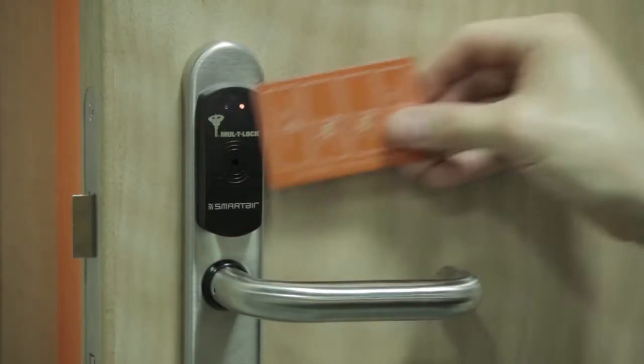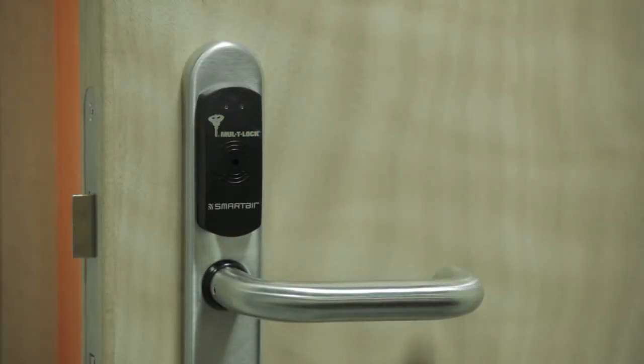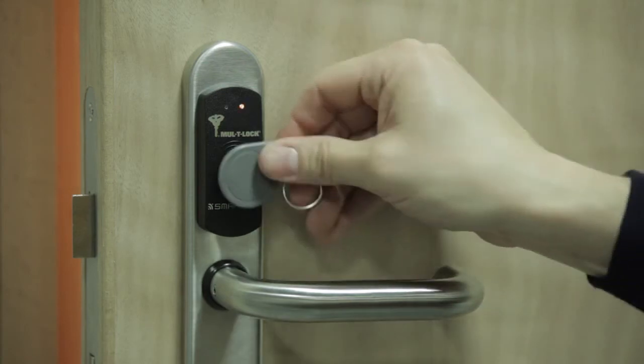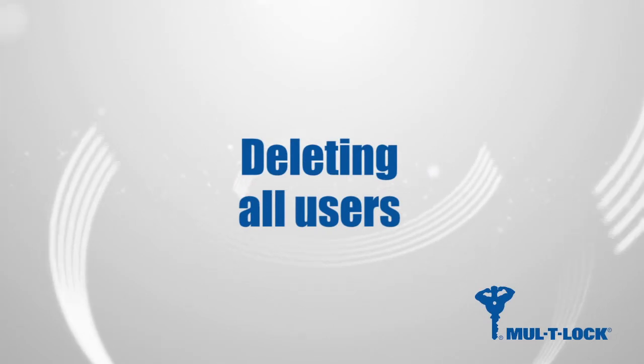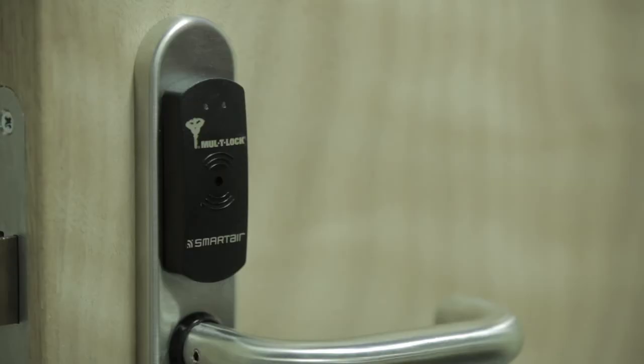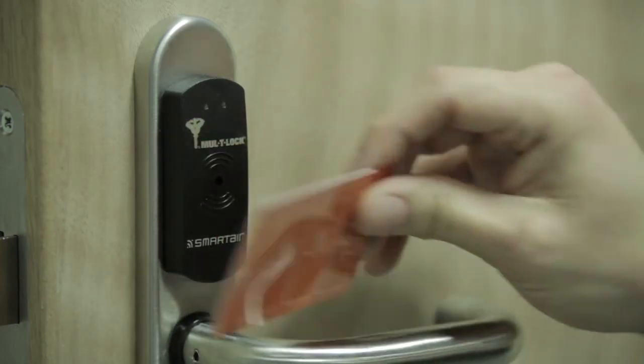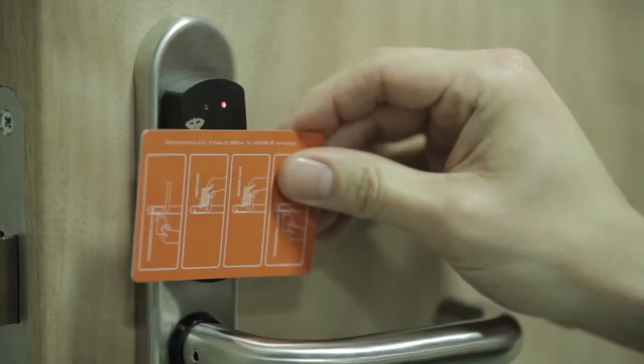To delete a user, present the management card to the reader followed by the user card or fob, or the appropriate shadow card to complete the deletion. To delete every user from the unit and reset it to a default condition, present the management card to the reader three times in succession.